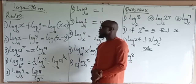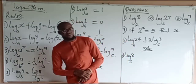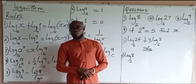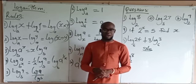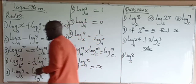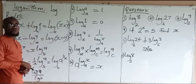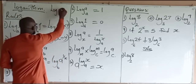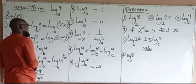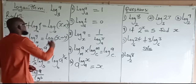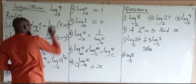We are looking at logarithms. The logarithm of a number is the power to which the base must be raised in order to get that number. For example, the logarithm of the number 9 to a particular base — let's say the base is 3 — is the power to which this base must be raised in order to get this number, which is 9.